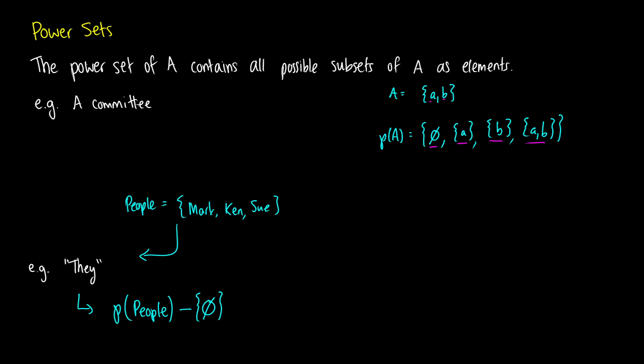The power set of people is going to give us all possible combinations of Mark, Ken, and Sue. But we know that "they" has to refer to at least one person, so we can take the power set of people to generate all of the possible combinations of those people, and then remove the case where we're not referring to anybody. If we were to have something like a pronoun "he," we don't really need to have the power set. What we would just do is we'd end up taking just the singletons. So "he" could be either Mark on his own or Ken on his own.